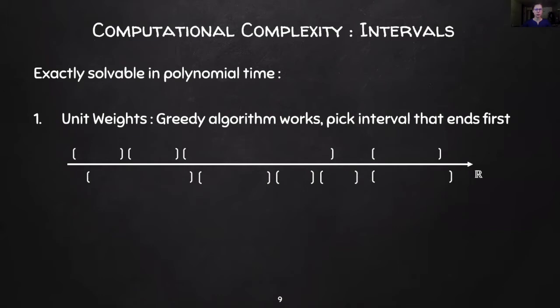MIS of intervals can be computed exactly in polynomial time using a simple algorithm. We simply greedily pick intervals from left to right according to whichever interval finishes first, and it's not too hard to see that this algorithm is optimal. In our toy example, the algorithm proceeds by selecting this interval, then discarding all intervals intersecting with it, then selecting this interval, and so on.